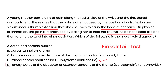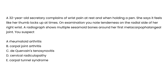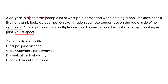A 32-year-old secretary complains of wrist pain at rest and when holding a pen, feeling like her thumb is locking up. On exam, there is tenderness on the radial side of her right wrist, and a radiograph shows multiple sesamoid bones around her first metacarpophalangeal joint. As a secretary doing repetitive typing, with tenderness along those tendons, you suspect De Quervain's tenosynovitis — choice C.